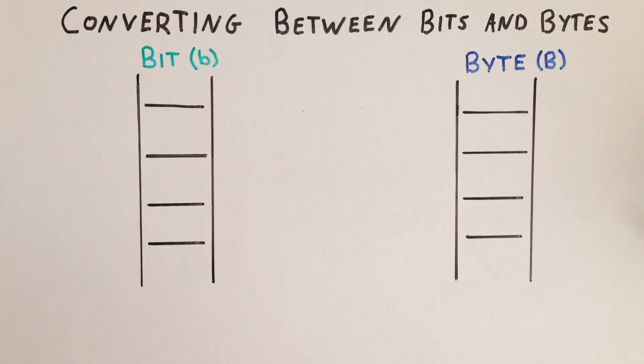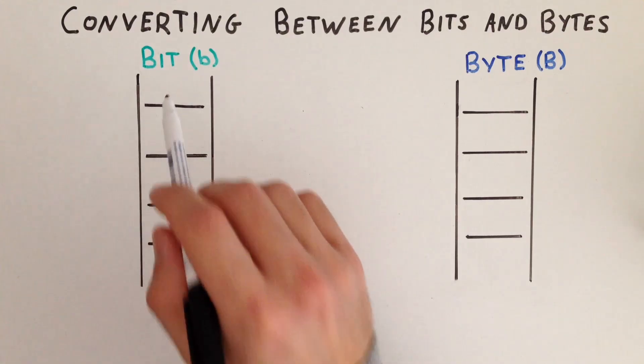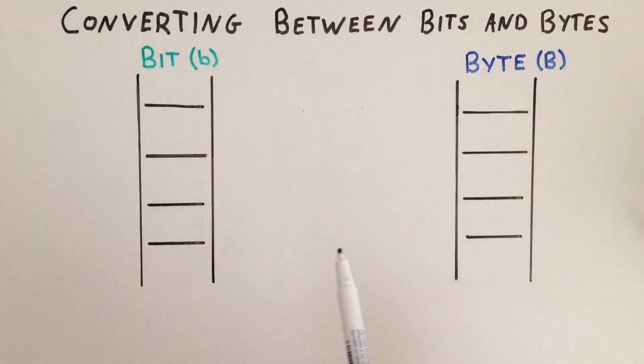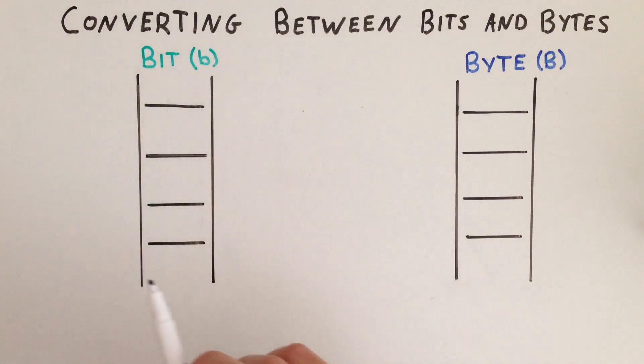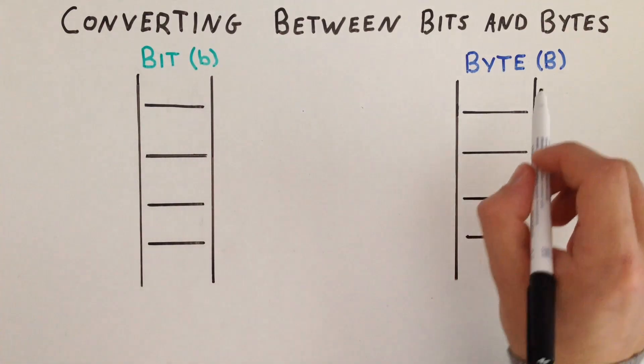Here's a quick analogy to help you when converting between bits and bytes. First, draw two ladders. Call the left ladder the bit ladder and the right ladder the byte ladder. The symbol we use for bit is a small b, and the symbol for byte is a capital B.